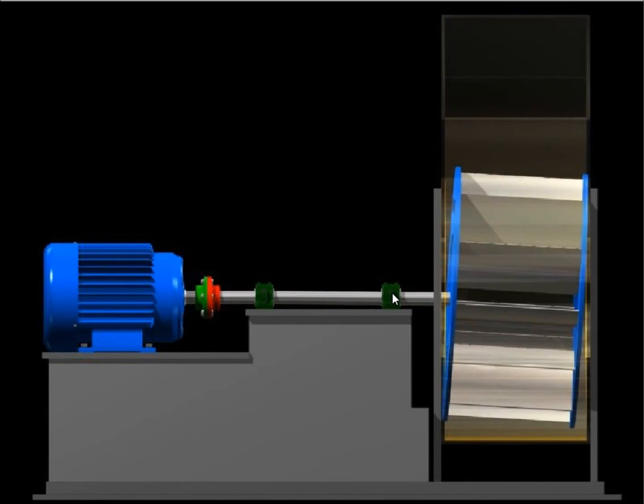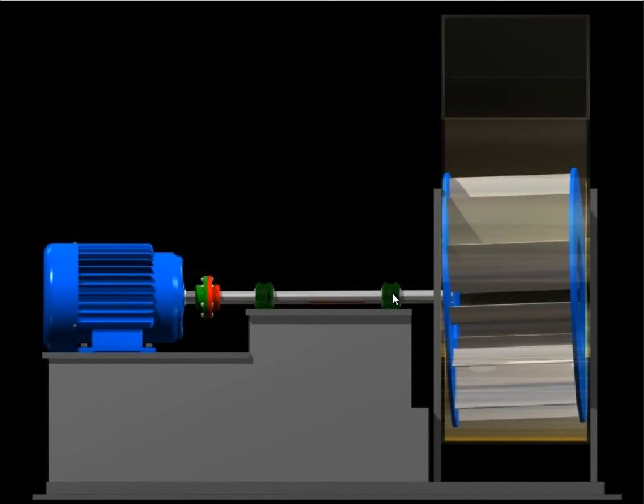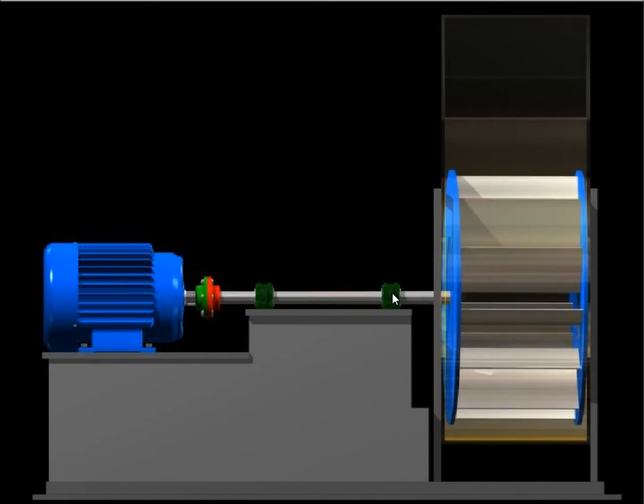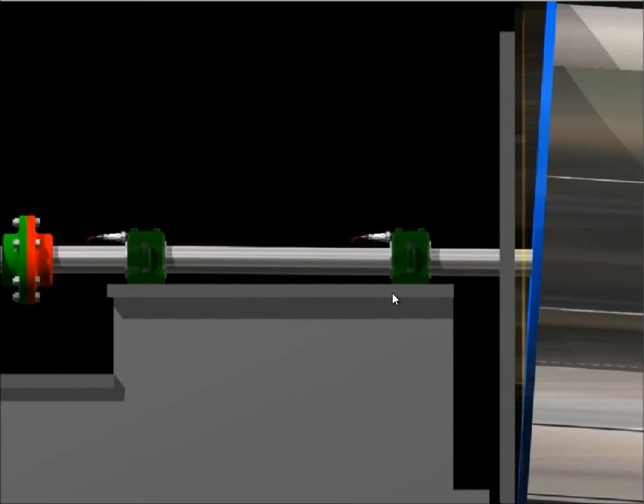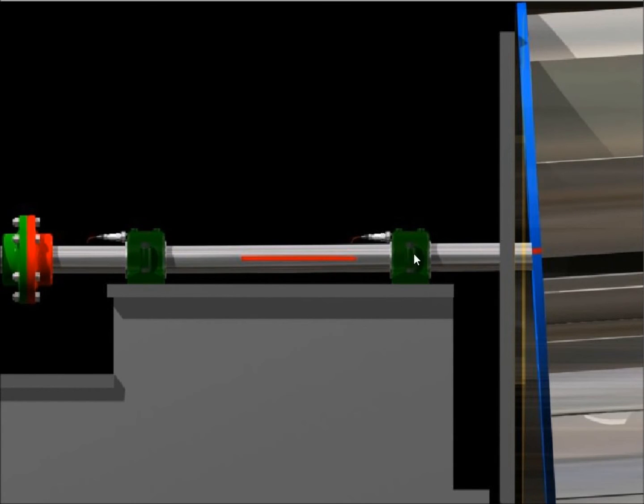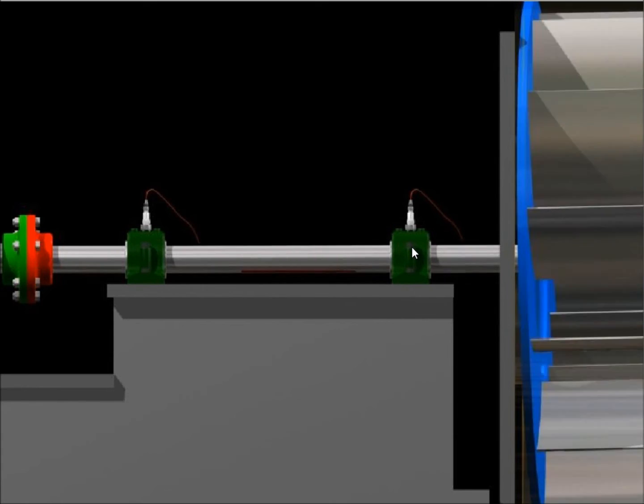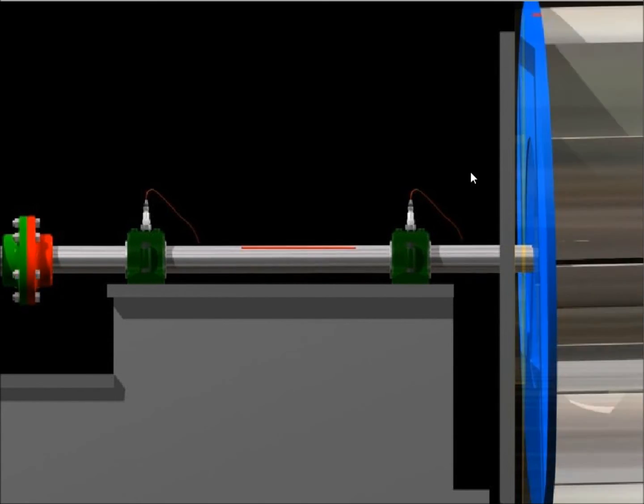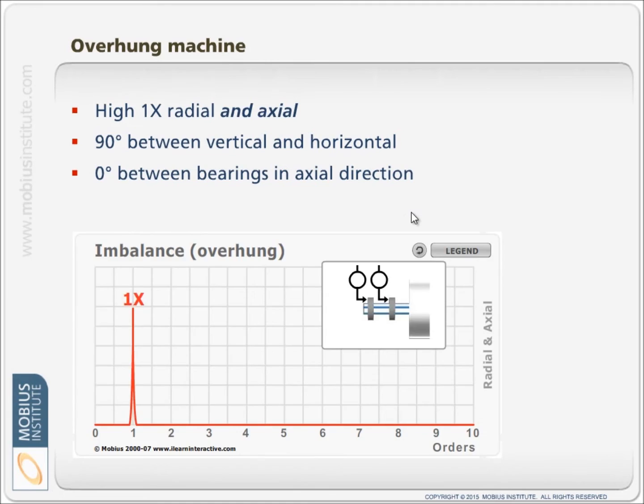We can also obviously measure the radial vibration and we would see the high 1x. So we will always see the high 1x peak, but now we'll see it in the axial direction as well.